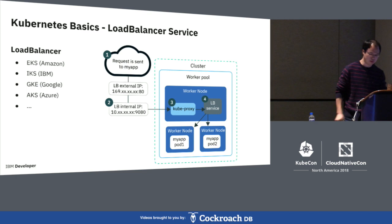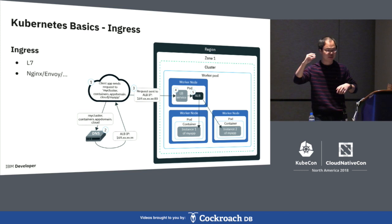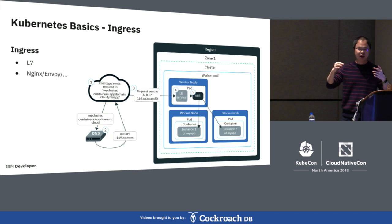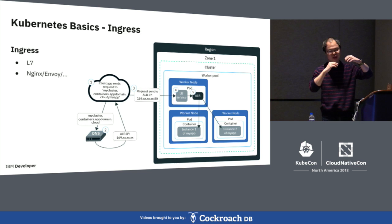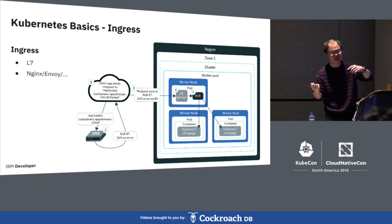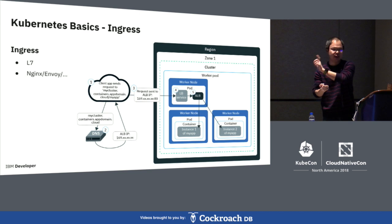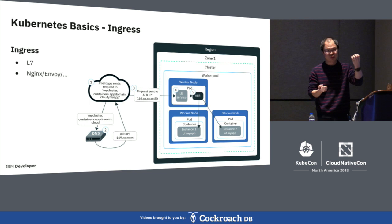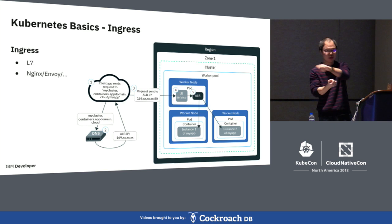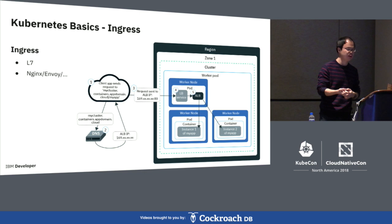If you are working on layer 7, things are a little different. Layer 7 network packets have more information than layer 4 packets. Layer 4 is just about IP plus port, but layer 7 gives you much more — for example, HTTP header information — so you can specify different rules like the same hostname with different subpaths. In Kubernetes, these rules are called ingress rules, and the central component to route traffic is called an ingress controller, usually implemented in NGINX or Envoy.